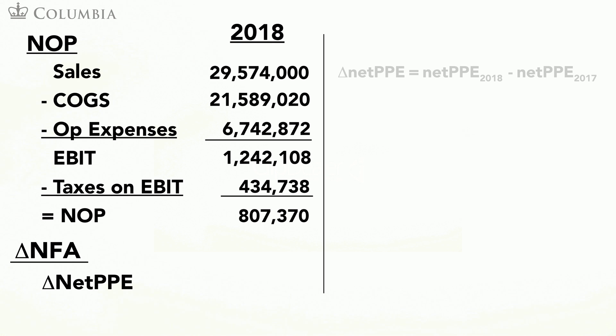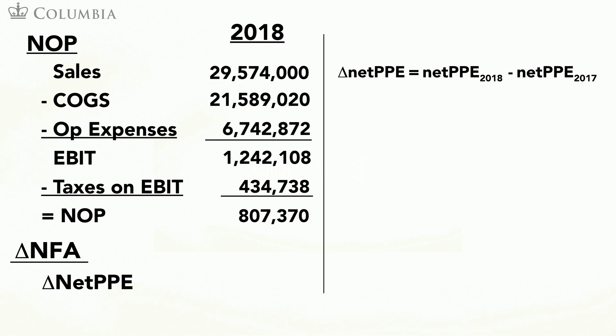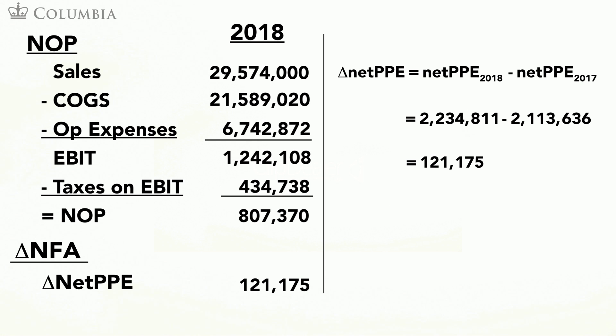So now we have net PP&E in 2017 from the balance sheet and in 2018 from our estimate. Note that we are forecasting an increase in net PP&E. This makes sense: since we are projecting higher sales, we need to project a higher level of net PP&E — that is, more machines — to be able to meet this higher sales level. Finally, we take the difference between net PP&E in 2018 and 2017, as this is what we need to compute the free cash flows.